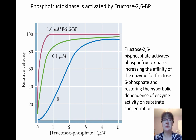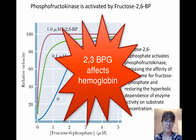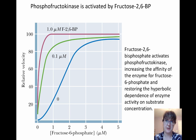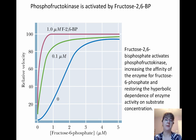Phosphofructokinase is also activated by fructose-2,6-bisphosphate. Realize this is not the same thing as 2,3-BPG, the 2,3-bisphosphoglycerate we talked about when looking at hemoglobin. While it still has two phosphate groups, that's the only similarity — this is fructose-2,6-BP. So fructose-2,6-bisphosphate is going to activate phosphofructokinase, and this is essentially going to override any of the high energy signals that phosphofructokinase might have received from high levels of ATP.